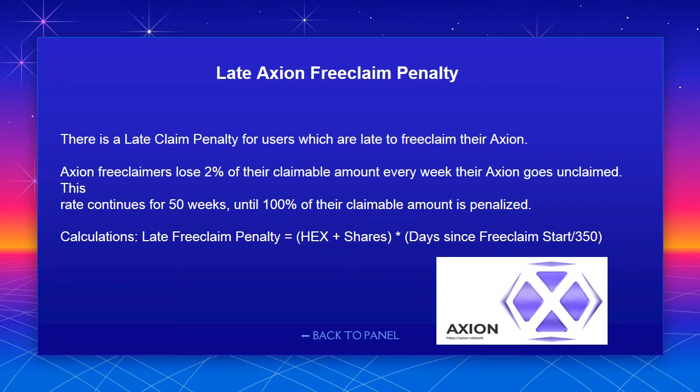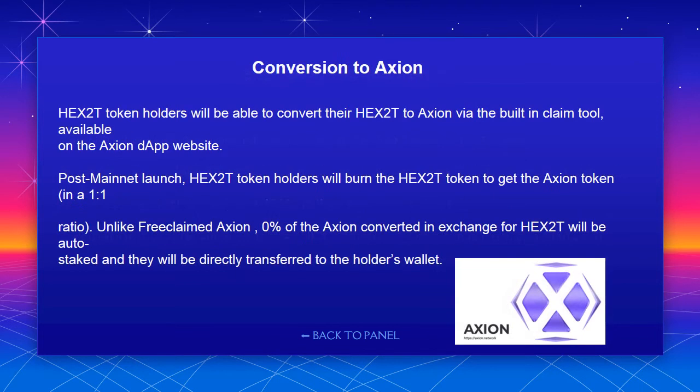Late Axion free claim penalty: there is a late claim penalty for users who are late to free claim their Axion. Free claimers lose 2% of their claimable amount every week their Axion goes unclaimed. This rate continues for 50 weeks until 100% of their claimable amount is penalized. The formula is: late free claim penalty = HEX plus shares × days since free claim start ÷ 350.